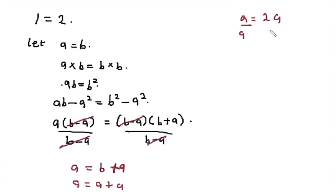So I can divide both sides by A, and that gets 1 equals 2. So is there a point where there's an error in the proof? You can pause the video and try to check the error in the proof.